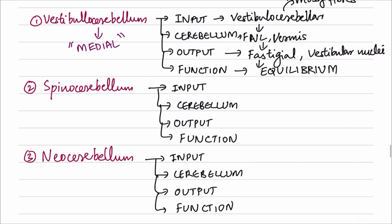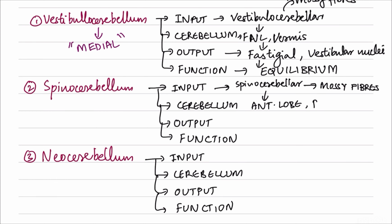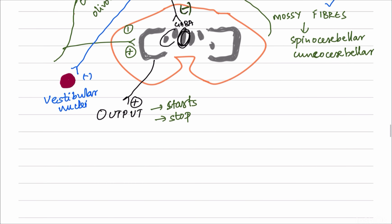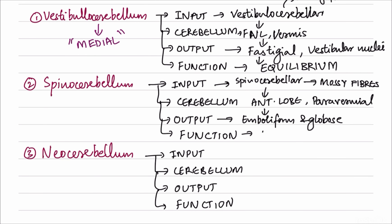For the spinocerebellum, input comes from the spinal cord through spinocerebellar fibers, which are a type of mossy fiber. Inside the cerebellum they are associated with most parts of the anterior lobe and the paravermial region. The output is through the emboliform and globus nuclei. The function is to maintain posture and muscle tone. The spinocerebellum is mostly involved with the paravermial part of cerebellum.